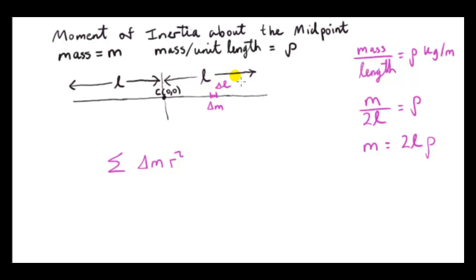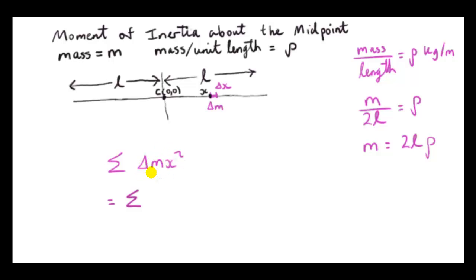Each small piece of the rod has length δx — we use δx rather than δL because we have a coordinate system with an x-axis and x can be positive or negative. The mass of the element δx is δm, and its distance to the origin is simply its x-coordinate. X is positive for a mass element to the right of the center of mass and negative to the left, but since we square it, the sign doesn't matter — the result is always positive.